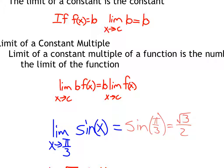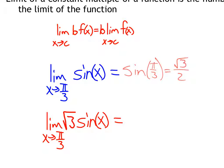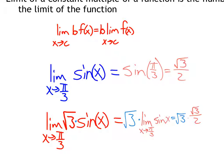Now check this out: what if we had the limit as x approaches π/3 of √3 times sin(x)? Since √3 is a constant, we can pull it out, and it becomes √3 times the limit as x approaches π/3 of sin(x). We already know that equals √3/2. So we have √3 times √3/2, which equals 3/2.